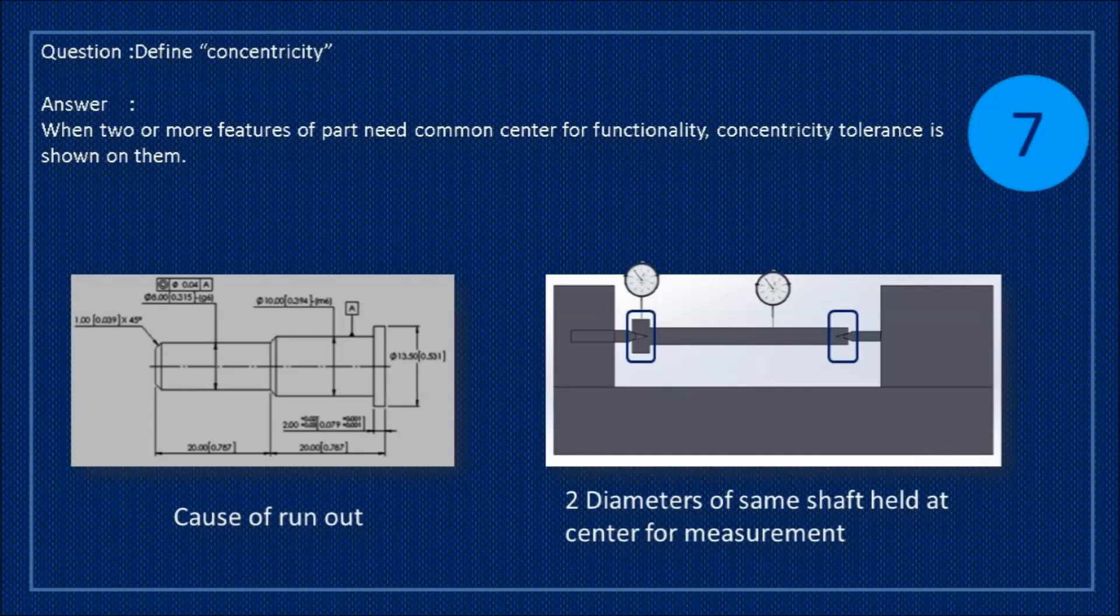Question: define concentricity. Answer: when two or more features of part need common center for functionality, concentricity tolerance is shown on them.